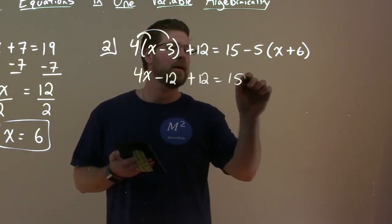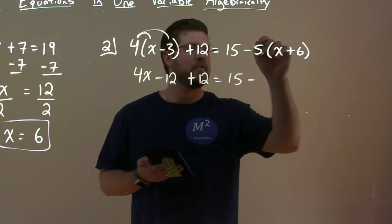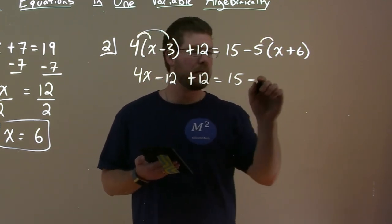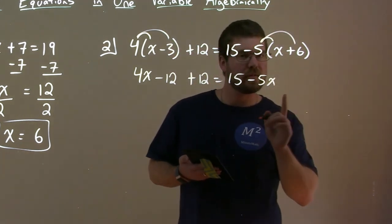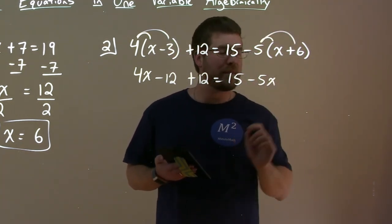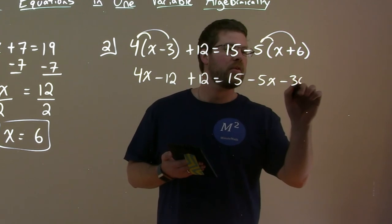equals 15, minus—let's distribute the minus 5. Minus 5 times x is a minus 5x. Minus 5 times 6, don't forget we bring the minus with us, is a minus 30.